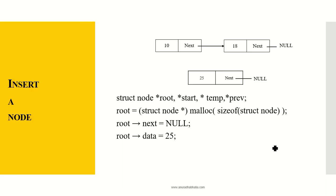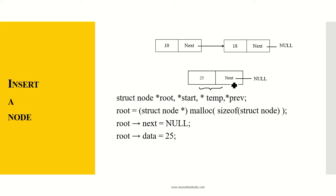Now, how do we insert a node in a linked list? We declare struct node and the different pointers: root, start, temp, and previous. We presume a linked list of 10 and 18 already exists. To add another node at the end, we write: root = (struct node*) malloc(sizeof(struct node)). Malloc is a function for memory allocation for a node. Then root->next = null, and root->data = 25. So this new node containing 25 is created.